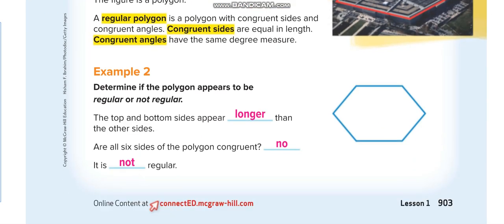But if you see this polygon, these two sides are a little bit longer than the other four sides. How many sides does it have? One, two, three, four, five, six — six sides total. The top and bottom sides appear longer than the other sides. So, are all six sides congruent? No — it is not a regular polygon.